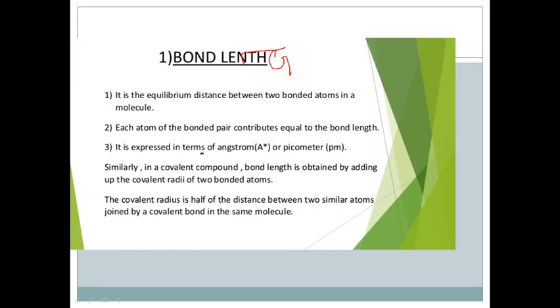Bond length: It is the equilibrium distance between the two bonded atoms in a molecule. Each atom of the bonded pair contributes equally to the bond length. It is expressed in angstrom or picometer (pm) and is denoted by A star.